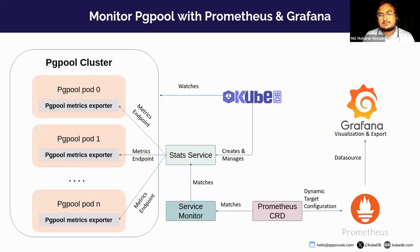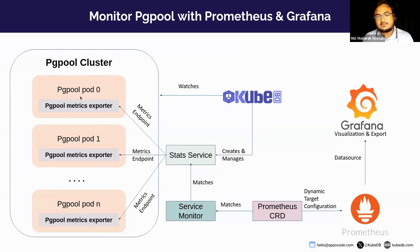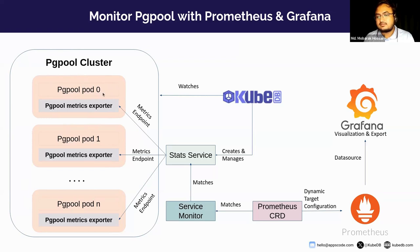Now, how does this monitoring work — how do Prometheus, Grafana, and KubeDB all work together? Here is a simple diagram of the whole process. In a PgPool cluster we can have many pods — you can configure any number of pods to a desired number. If you enable the monitoring part, there will be a metrics exporter running as a sidecar. For each pod there will be a metrics exporter individually.